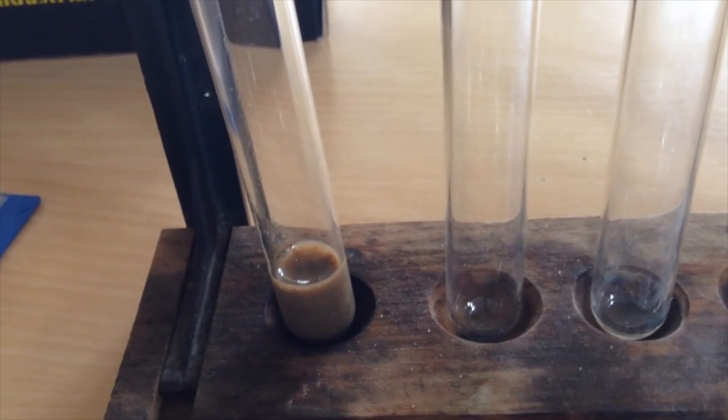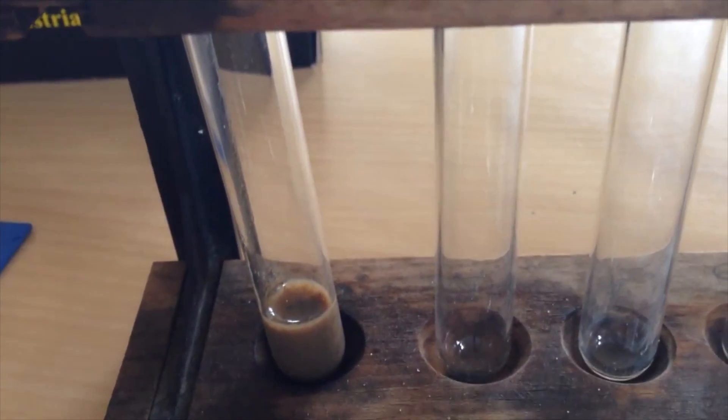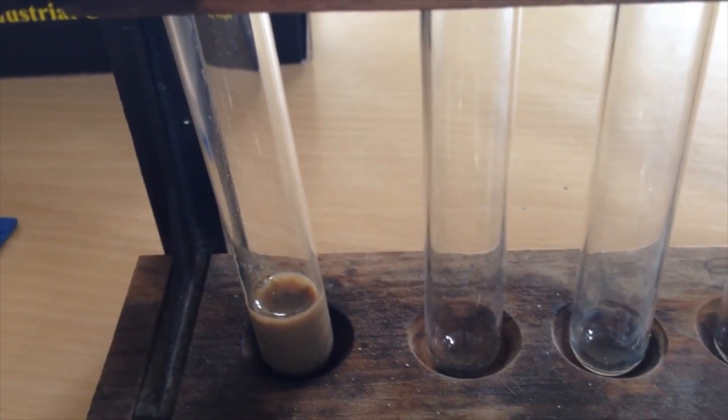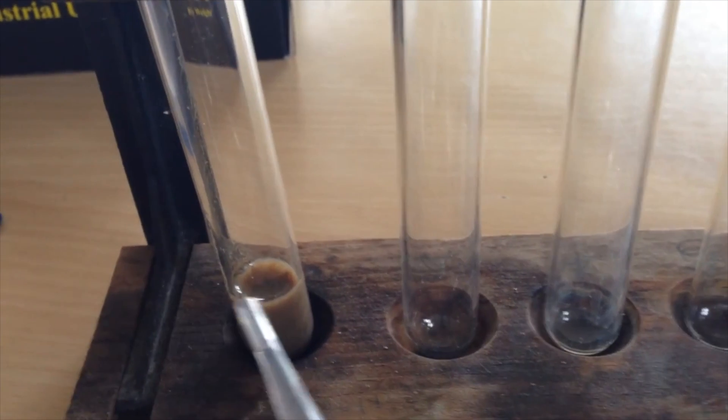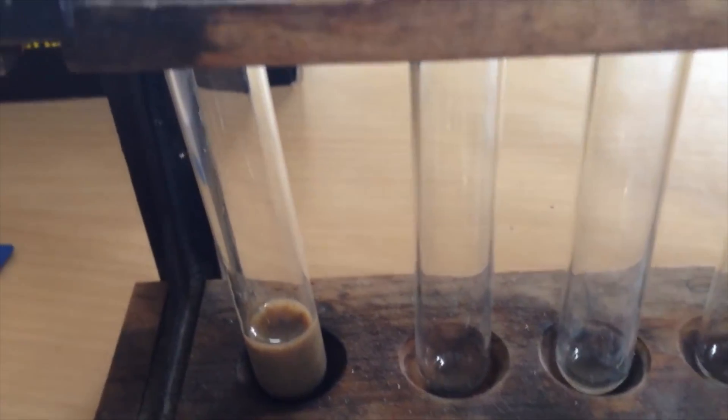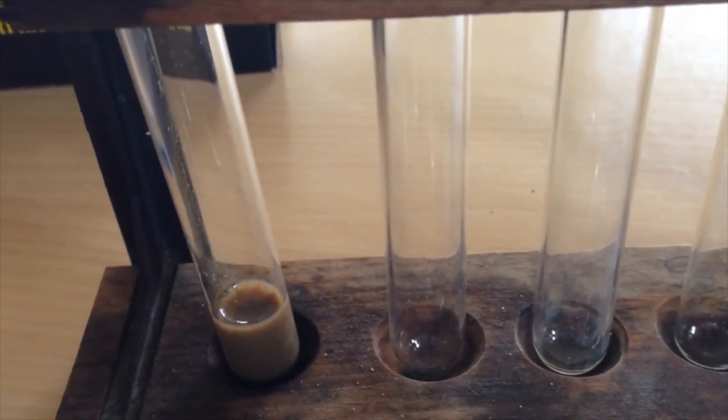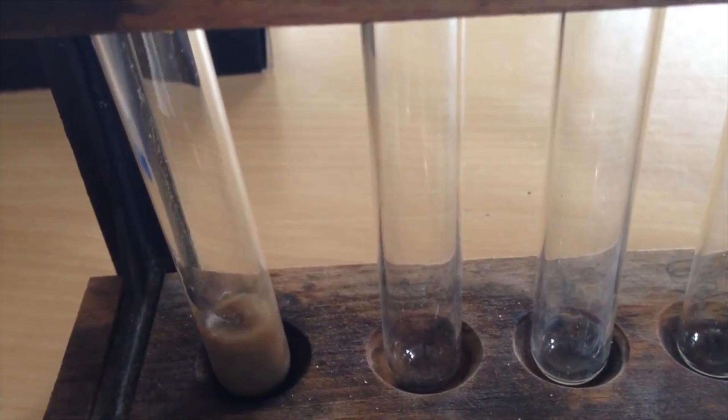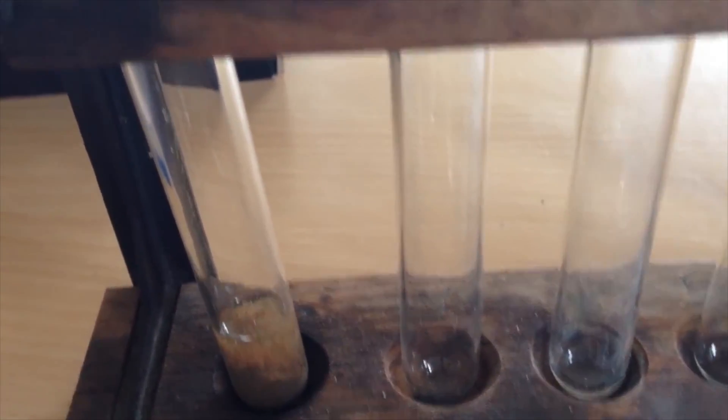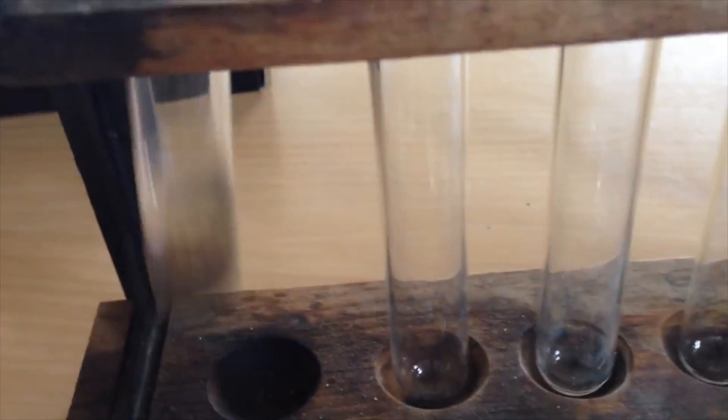Here we are going to be testing for the presence of ethanal. This is a Tollen silver mirror test. In the beaker here I have sodium hydroxide, silver nitrate. I'm just going to add dilute ammonia just enough to completely dissolve the precipitate.